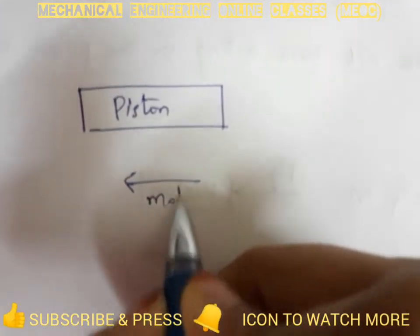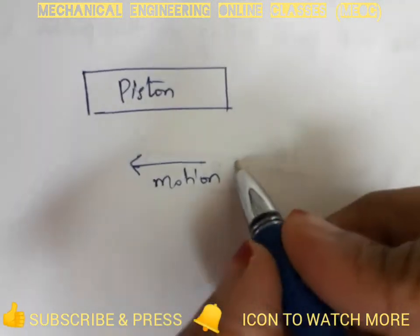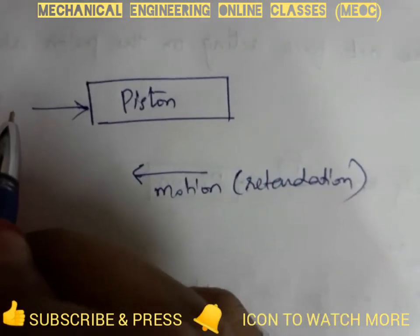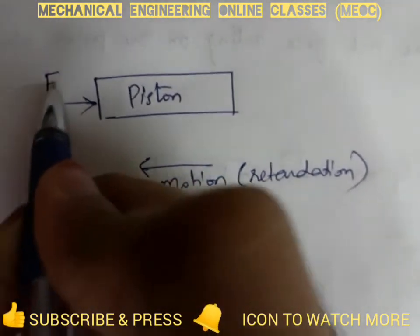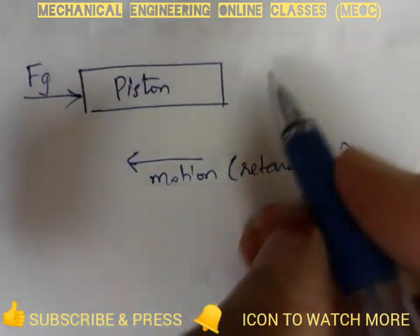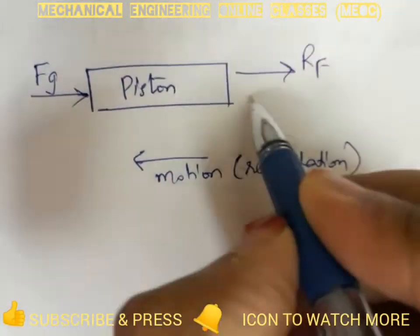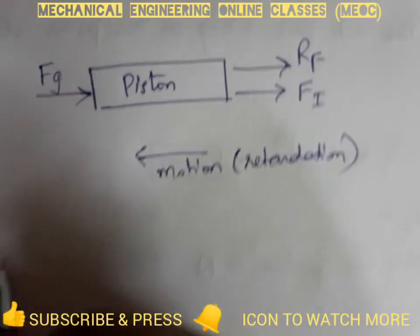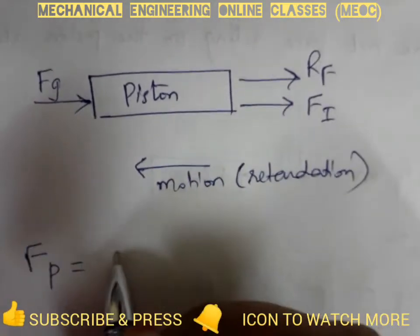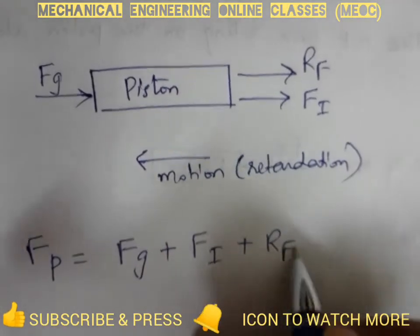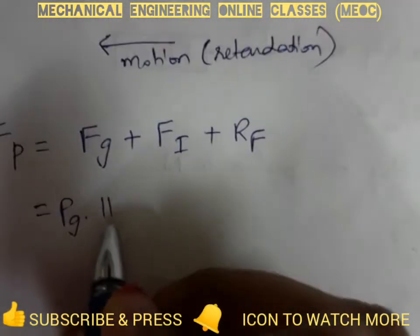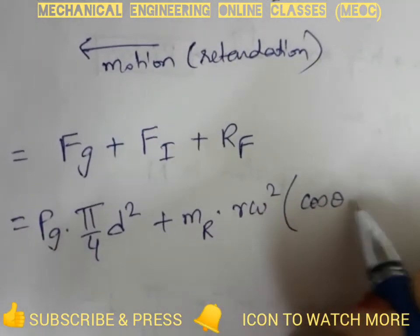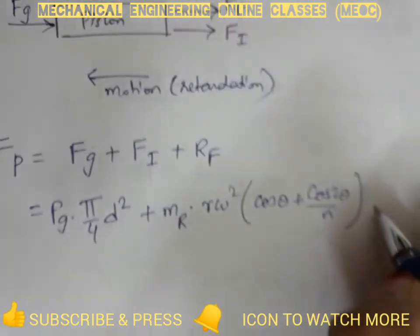Case 2: when the piston is moving away from IDC, this is retardation. Since the gas is still on the left of the piston, Fg acts from the left. Both inertia force and friction now act in the same direction as Fg, opposing the motion. So the net axial force or piston effort is: Fp equals Fg plus FI plus RF, which equals Pg times (pi by 4 d squared) plus MR times R omega squared times (cos theta plus cos 2 theta divided by n) plus RF.